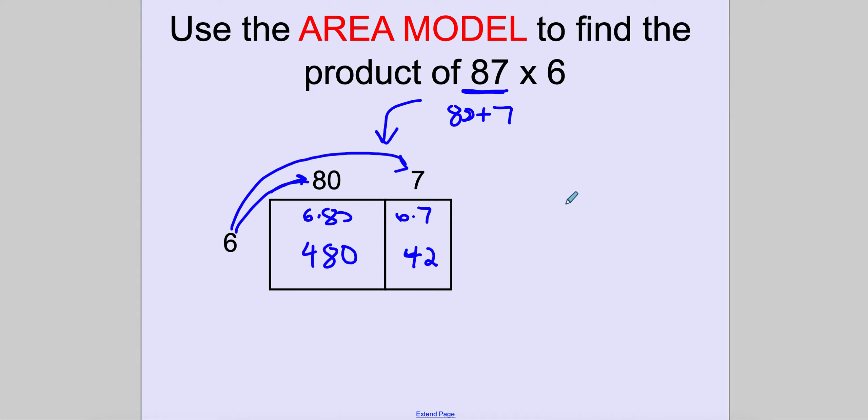Then all I need to do is just add my amounts, 480 plus 42. 0 and 2 is 2. This is 12 and 5. So I get a total of 522.